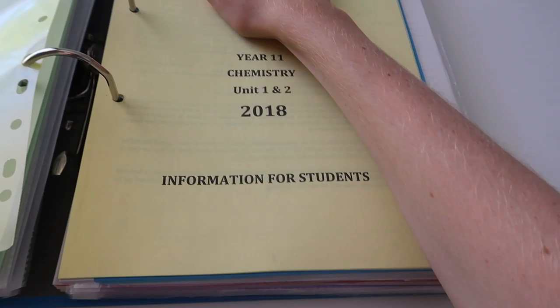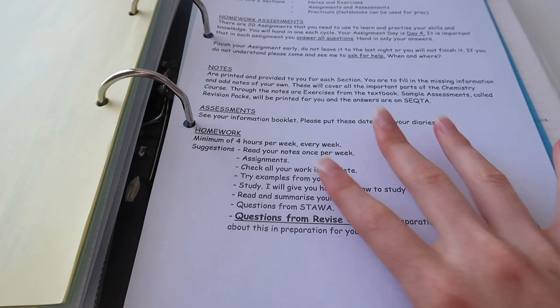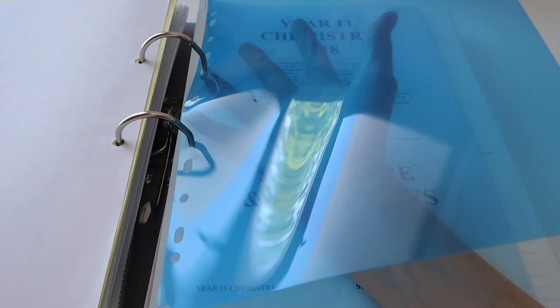And this next section is all the important course documents I got given. So this is, as you can see, information for students. And then this sheet here was just more information that we got given at the start of the year, so I just put that there. And then we have another divider.